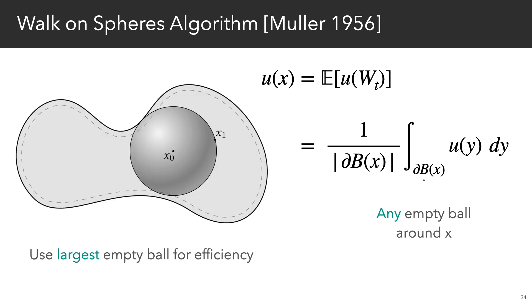So we know that the value of u at any point x just equals the average value over a sphere around x. So in terms of the algorithm, we pick a random point on the biggest empty sphere around x. But since we don't know the value of u here, we simply recurse until we get to some small distance to the boundary, where we can grab the boundary value.